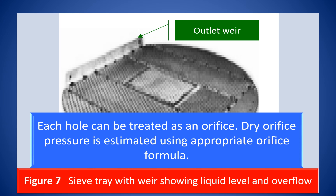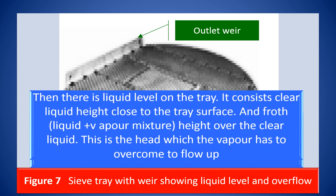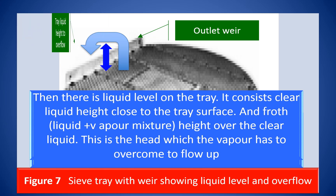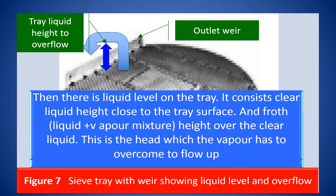You are all aware of the orifice formula. We can use a similar orifice formula to calculate the dry orifice pressure drop. Then there is a liquid level on the tray. It consists of clear liquid height close to the tray surface and a froth height over the clear liquid. This is a head which the vapour has to overcome to flow. So the total pressure drop comes from the dry orifice pressure drop plus the hydrostatic head pressure drop due to the liquid level on the tray.